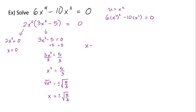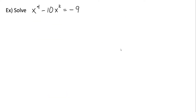Our solutions are x equals zero, x equals positive square root of five over three, and x equals negative square root of five over three. Here's one more example. I would suggest pausing the video, trying to work through this one on your own, then hitting play to see the full solution.